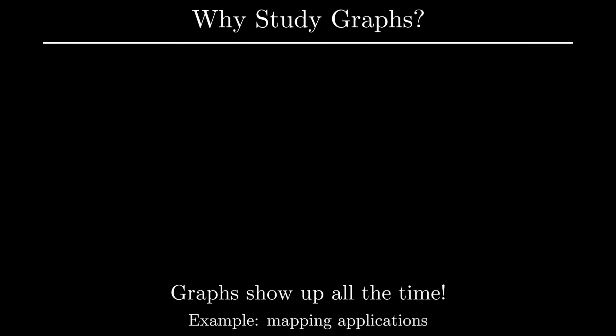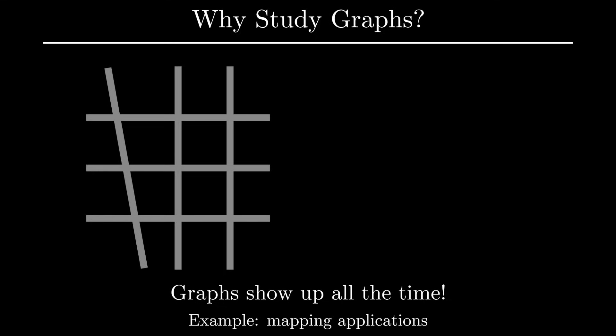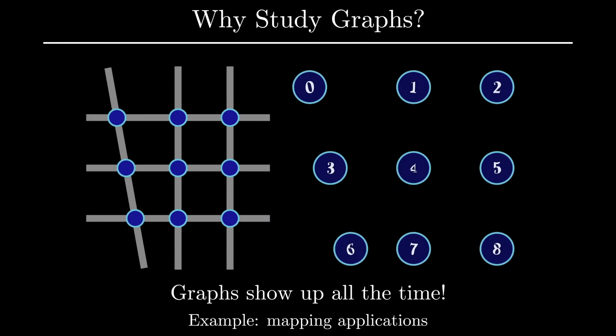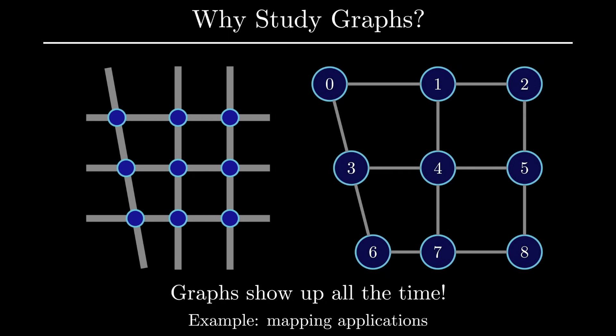Let's first start with the most important question: why should we care about graph theory? The short answer is graphs show up everywhere, sometimes in expected ways and also sometimes in surprising ways. One of the most direct applications are in mapping and navigation applications. In any of these applications you often deal with roads and intersections which can be naturally modeled as a graph, where each vertex represents an intersection and the edges between vertices signify the roads between intersections. Navigation applications might be interested in the best route between a starting point and an ending point, and this problem naturally translates into many well-known graph theory problems.